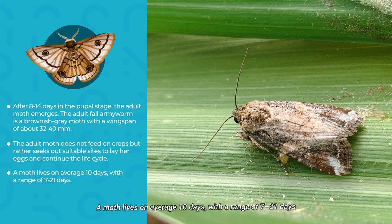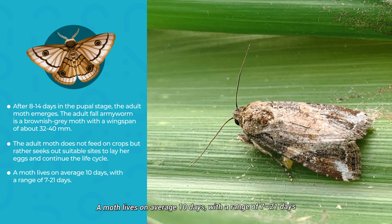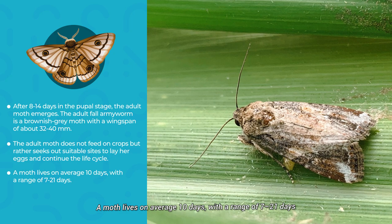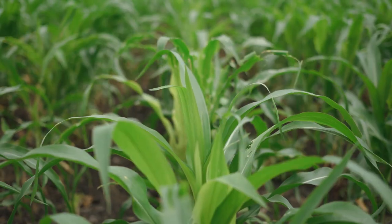A moth lives on average 10 days, with a range of 7 to 20 days.